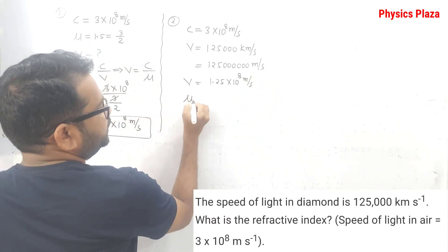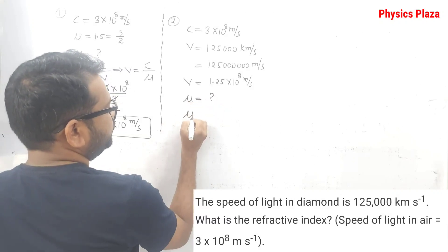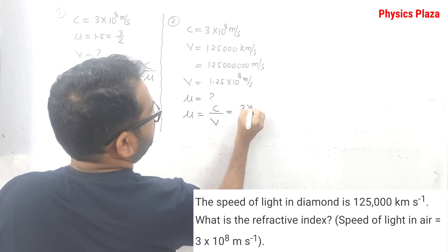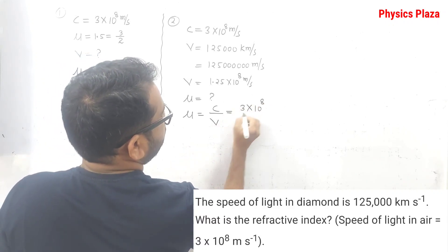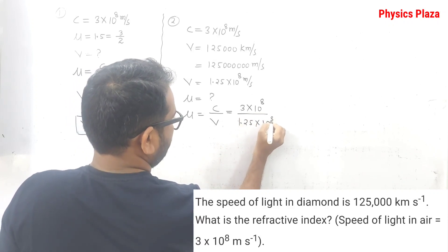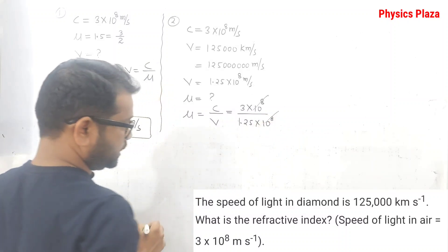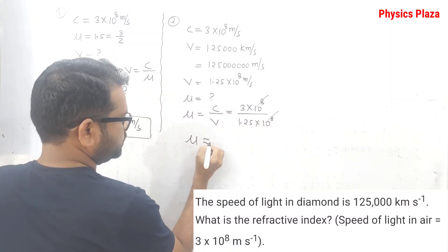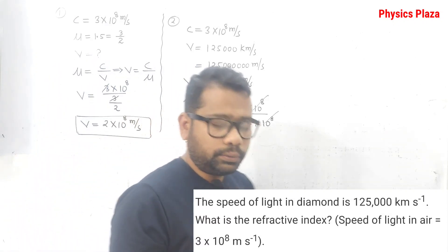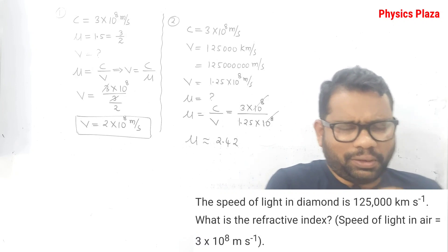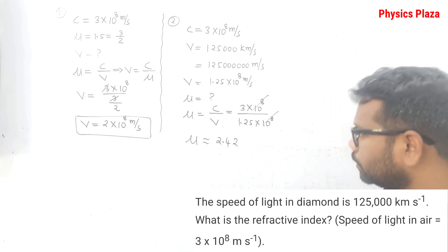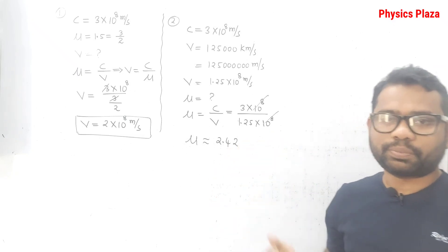We need to calculate the refractive index of diamond. So μ = c/v = 3 × 10⁸ / 1.25 × 10⁸. After cancelling 10⁸, the refractive index works out to approximately 2.4 for diamond.